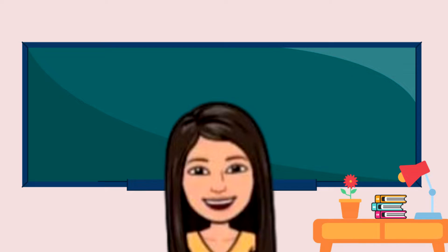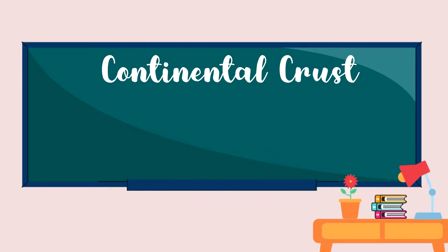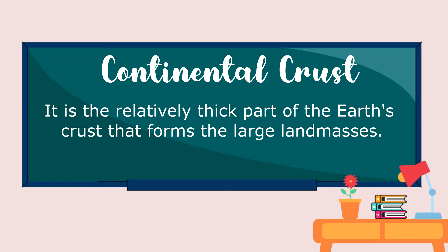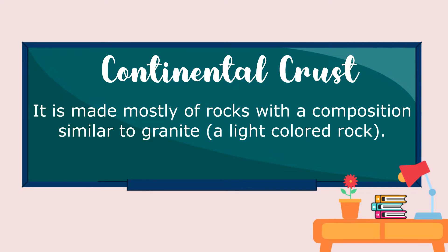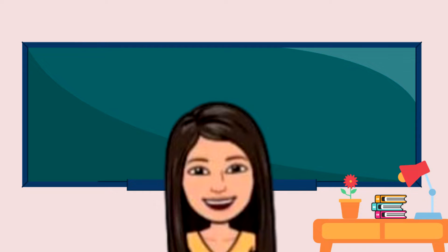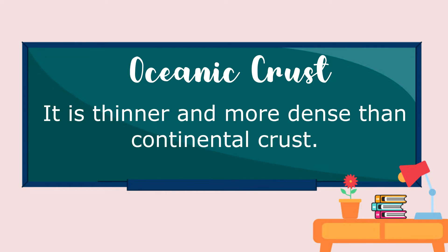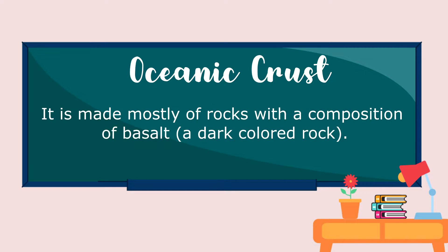Now let us differentiate continental crust and oceanic crust. Continental crust is the relatively thick part of the Earth's crust that forms the large land masses. It is thicker but less dense. It is made mostly of rocks with a composition similar to granite, a light-colored rock. The oceanic crust is thinner and more dense than continental crust. It is made mostly of rocks with a composition of basalt, a dark-colored rock.